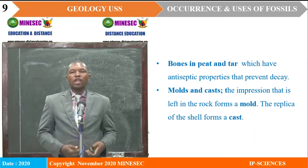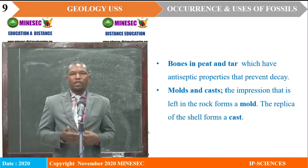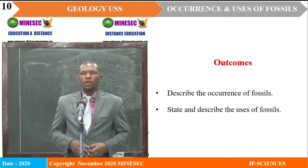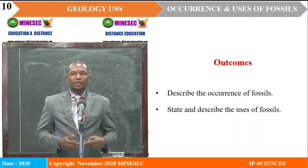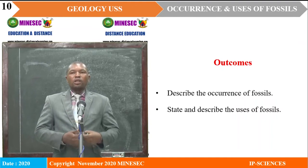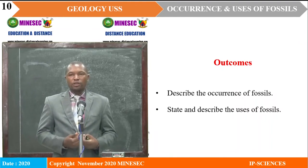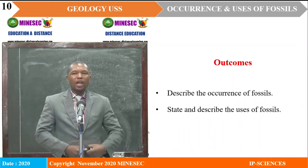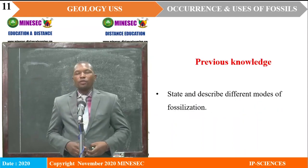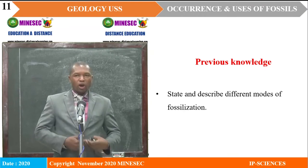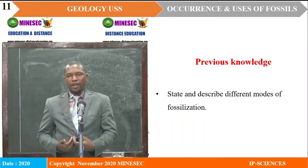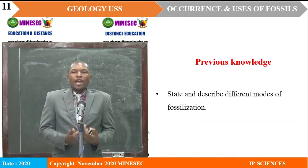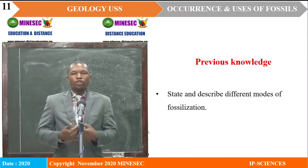That is where we end our assignment. The correct approach to the assignment had to reflect these particular ways of preservation. In today's lesson, which focuses on occurrence and uses of fossils, we will first look at how to describe the occurrence of fossils in rocks. At the end of our lesson, we will be able to describe the occurrence of fossils especially in rocks, and state and describe the uses of fossils. Previously, we learned about modes of fossilization — different ways in which fossils are preserved — and these will help us understand how fossils occur and how they can be used.